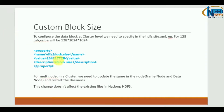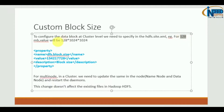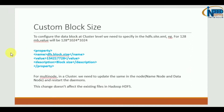If we want a custom block size, we will have to add one property in hdfs-site.xml. This property is dfs.block.size, and we mention the size inside the value part of the XML. For example, to set it to 128 MB, the value would be 128 × 1024 × 1024.